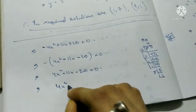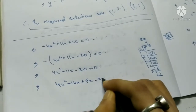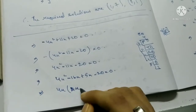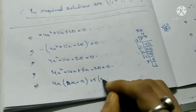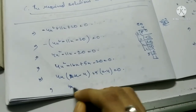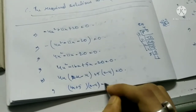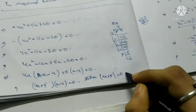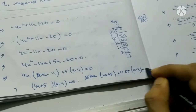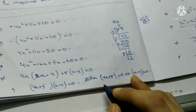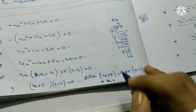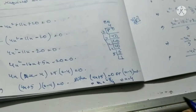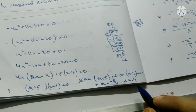Splitting the middle term: 4x² minus 16x plus 5x minus 20 equals 0, so 4x(x minus 4) plus 5(x minus 4) equals 0, giving (4x plus 5)(x minus 4) equals 0. Therefore x equals minus 5/4 or x equals 4.